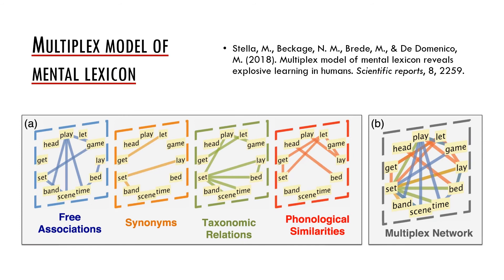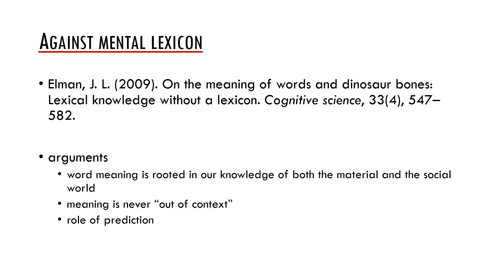On the right side you can see how the network would look like. In one of the previous presentations we mentioned Jeff Elman who argued that words do not have meanings, at least not meanings such as linguists would typically propose. In this paper he argues that there is nothing such as a mental lexicon where we should store words, their meanings, and other related information. One thing is that the meaning of a word is rooted in our knowledge of both the material and the social world and that it is never out of context. This is something the mental lexical models cannot really account for.